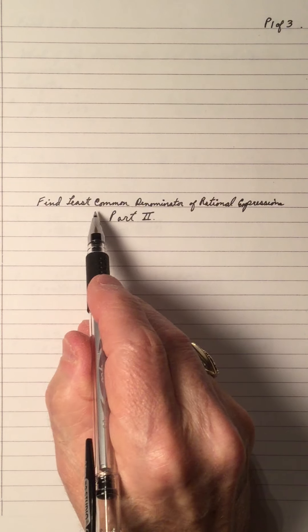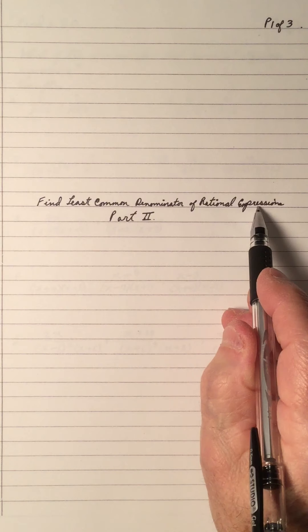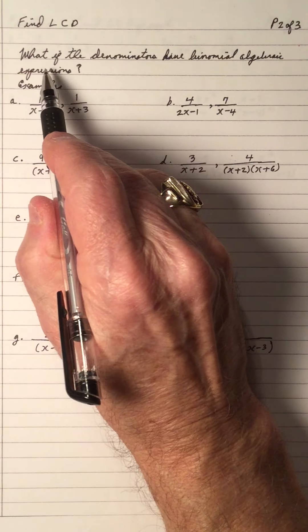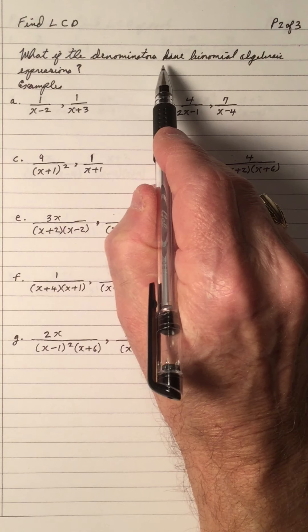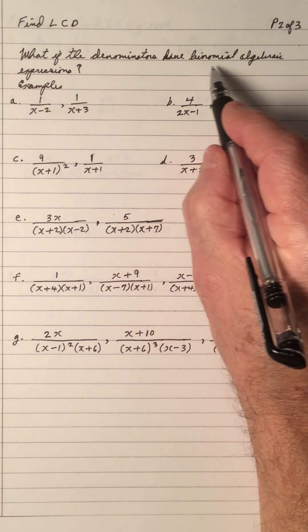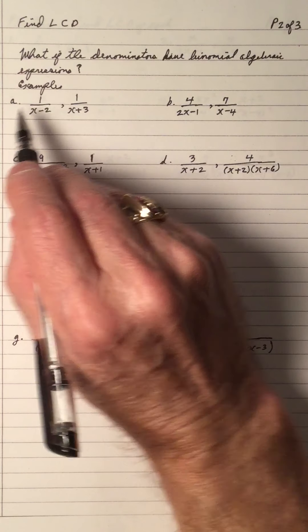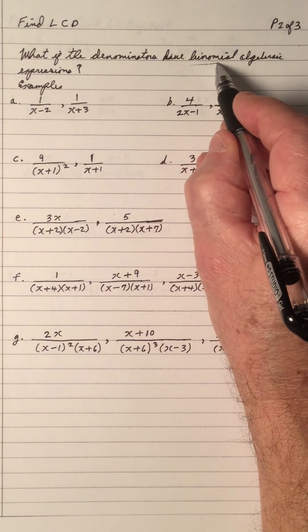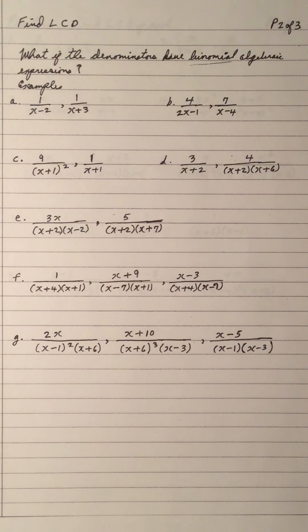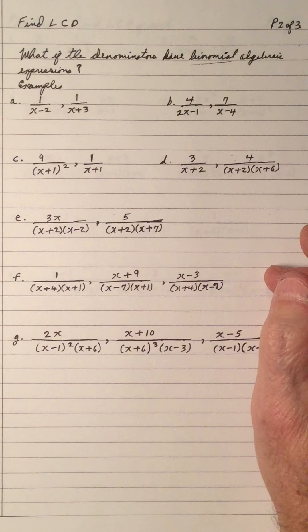Welcome to my video on Find the Least Common Denominator of Rational Expressions, Part 2. In Part 2, we're going to find the LCD, but what if the denominators have binomial algebraic expressions — binomials. So we're looking at binomials this time. The previous video looked at the monomials.